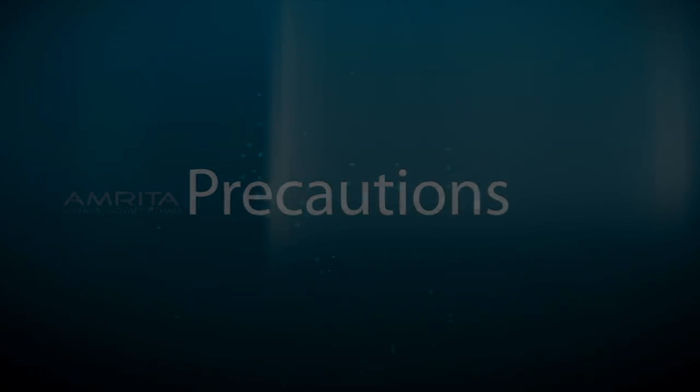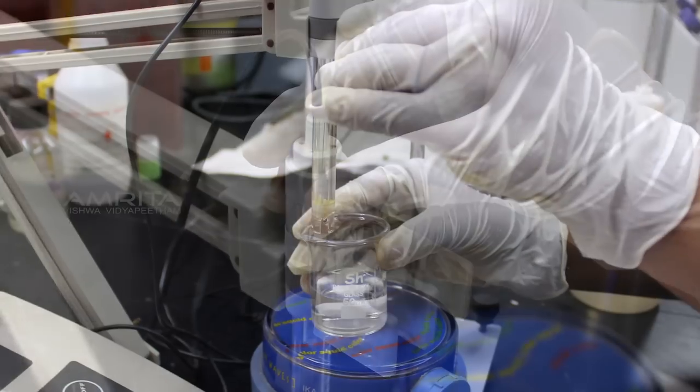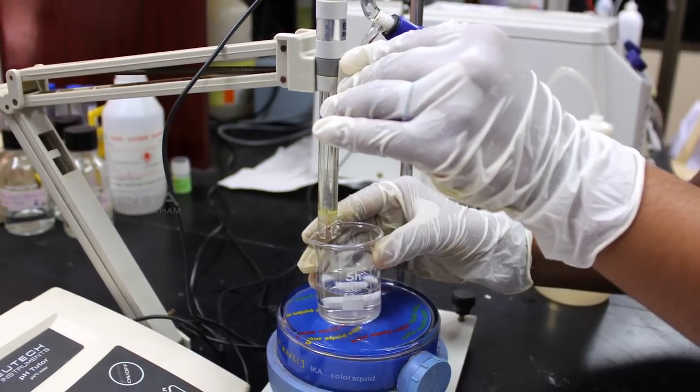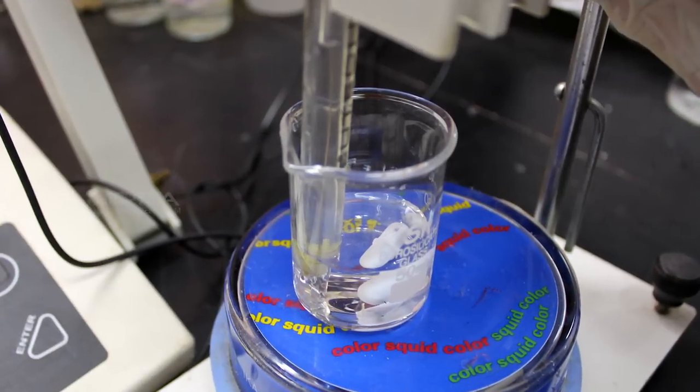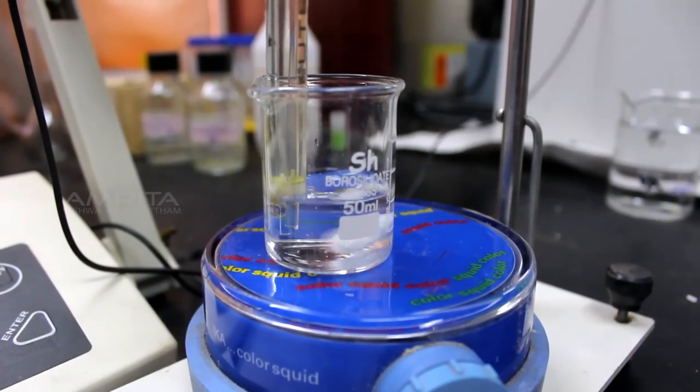Precautions: Always clamp the electrode in order to avoid the bumping of stir bar with it during stirring. Make sure that the electrode is properly immersed in the beaker containing amino acid solution otherwise the pH reading will be erratic.